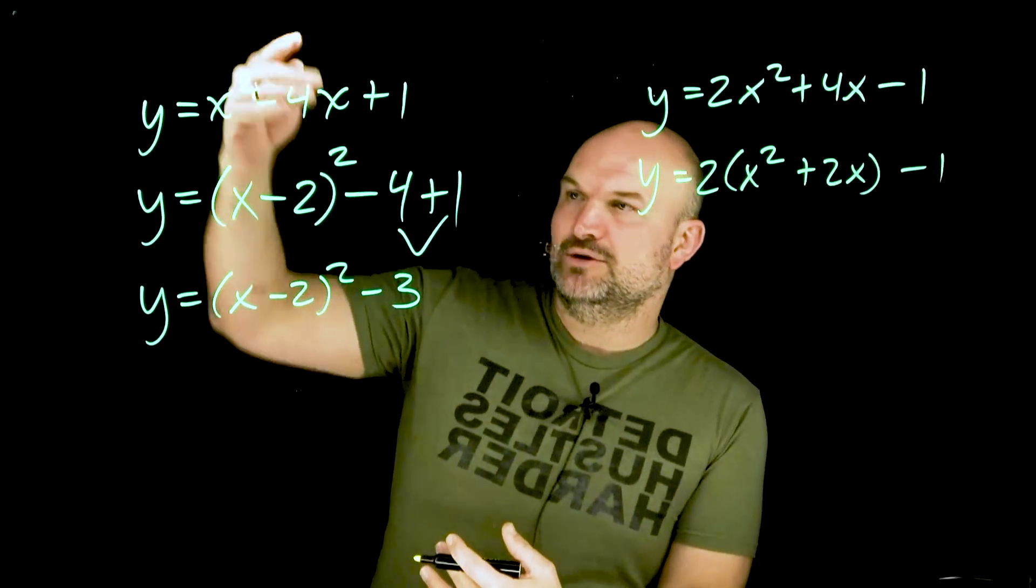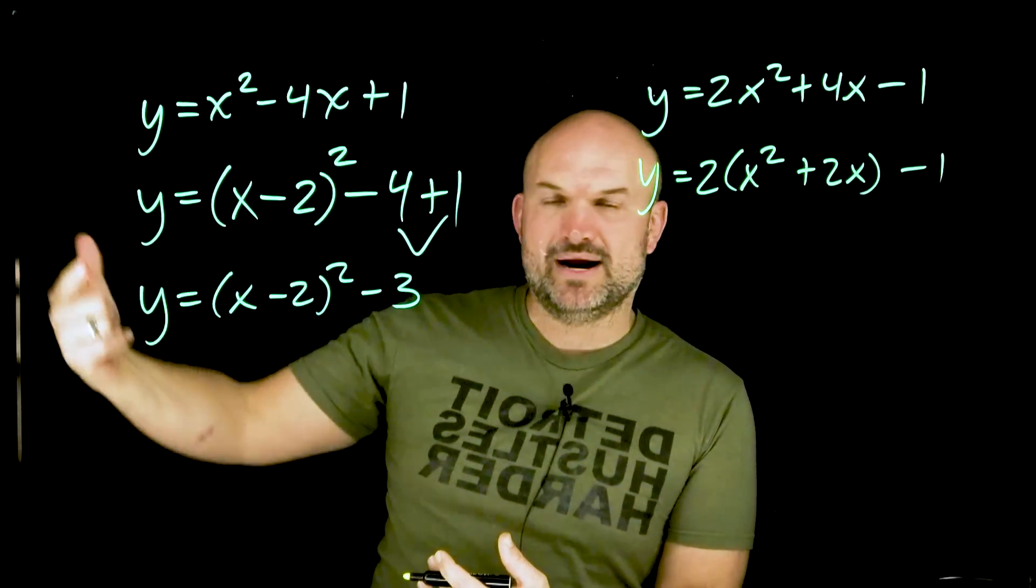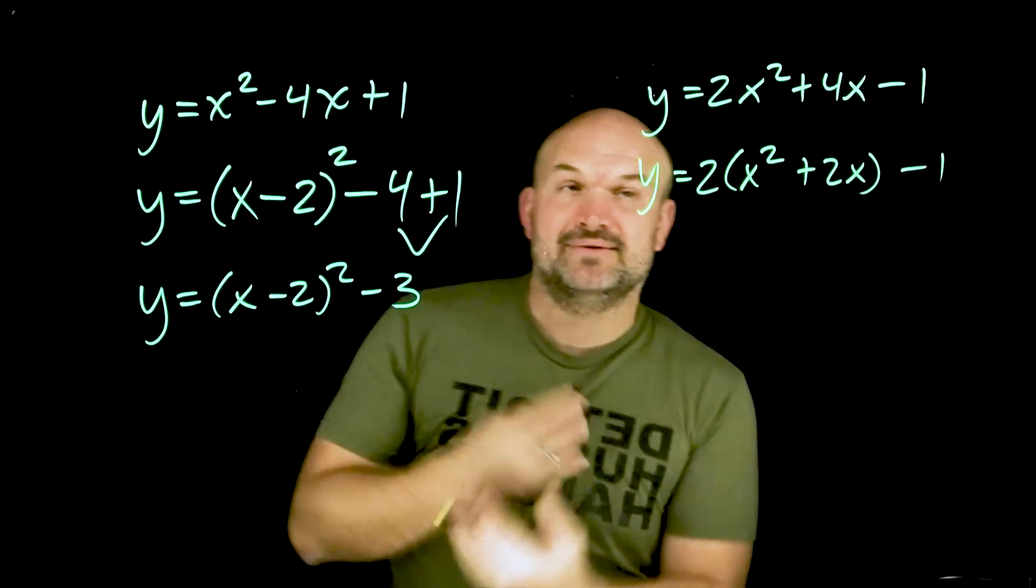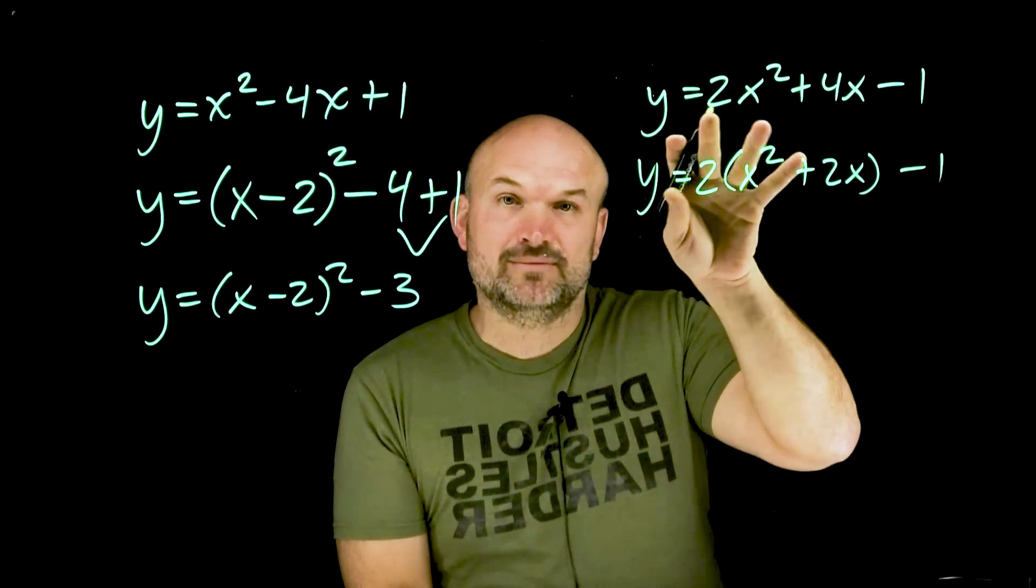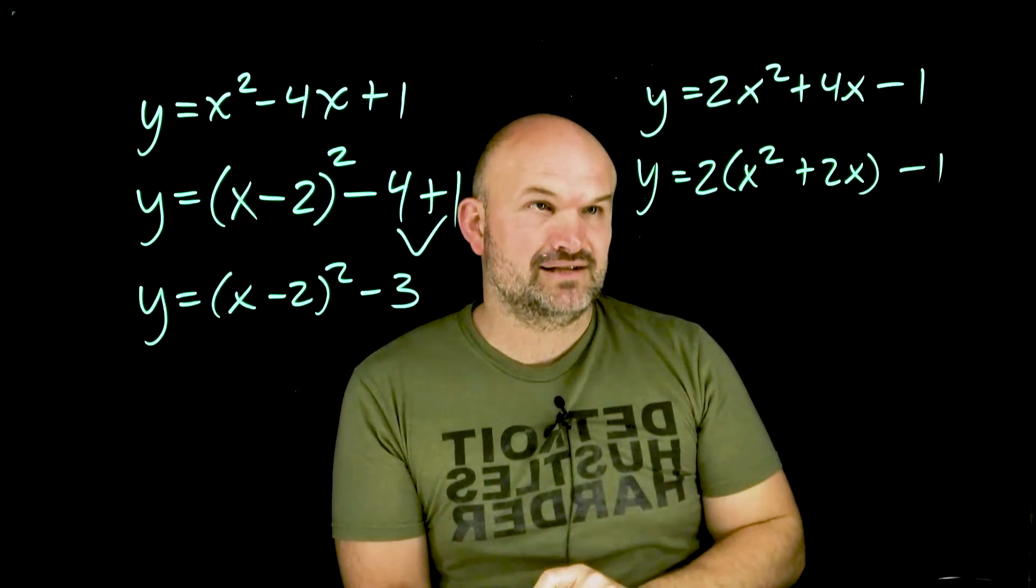When you're doing this, b putting into the vertex form, or your b divided by two squared, you gotta make sure you're dealing with the right b, and that right b is when your a is one. So, you gotta make sure you factor out a term, whatever you need to do, so therefore your a is going to be one.